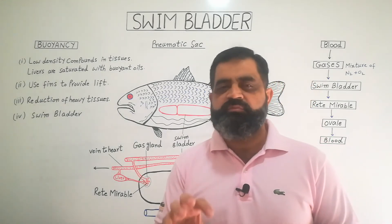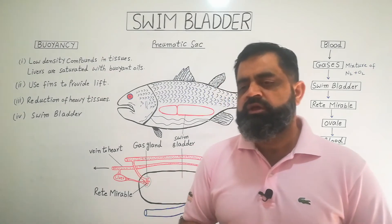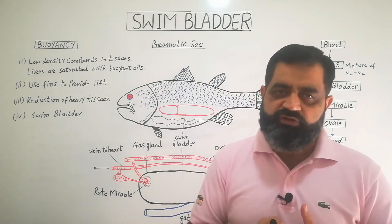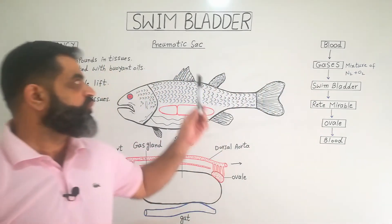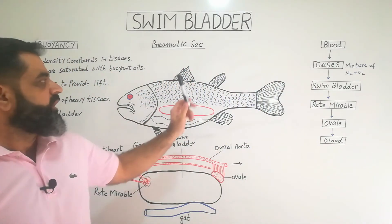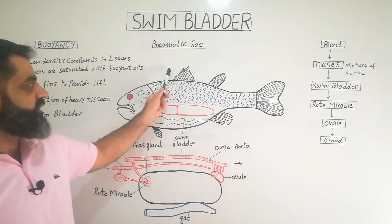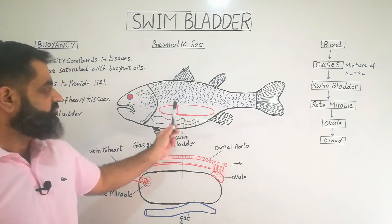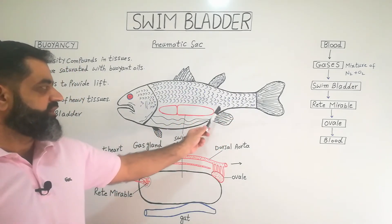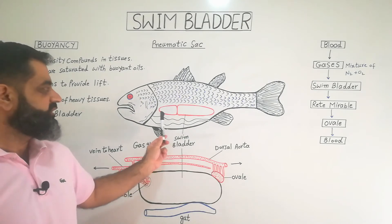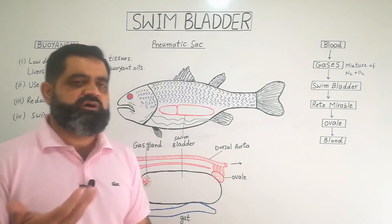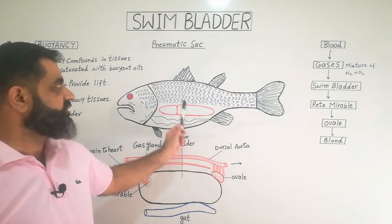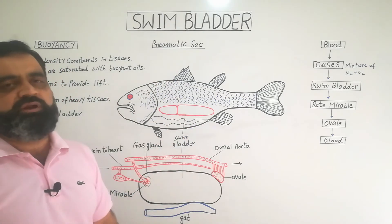The fourth and last adaptation is the swim bladder, which we are going to discuss today. The swim bladder is a sac-like structure present in the abdominal cavity of fish. It is also known as the pneumatic sac. Looking at the structure of a fish, on the ventral side there is the abdominal cavity containing visceral masses like the stomach, liver, and heart. Just dorsal to the visceral mass there is this sac-like structure known as the pneumatic sac or swim bladder.